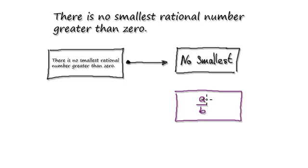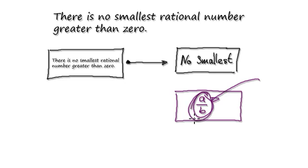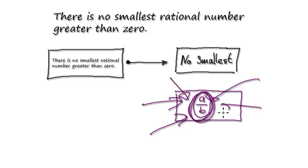So with proof by contradiction, you assume this to be true. Let's just assume that there does exist the smallest possible rational number out there — the smallest in the world, and there is no smaller. If you make this assumption, you're saying there is no smaller rational number out there.